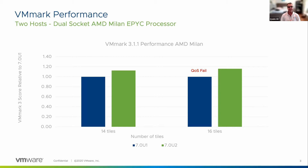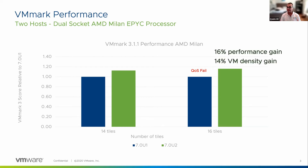We're running on the latest AMD Milan processor. Compared to the previous Rome generation, it has eight cores per LLC, so the LLC is wider, which helps with LLC locality. For 14 tiles there is no QoS failure, but the 7.0U2 performance is about 15% better. For 16 tiles, QoS fails in 7.0U1, whereas in 7.0U2 there is no QoS failure and performance is 16% better. You can run 16 tiles in 7.0U2 versus 14 tiles in 7.0U1 — that translates to a 14% increase in VM density.